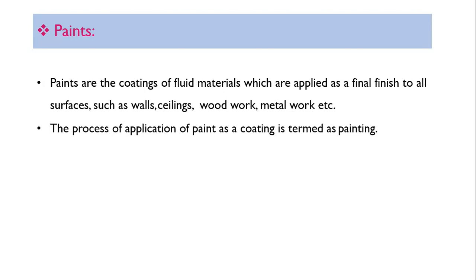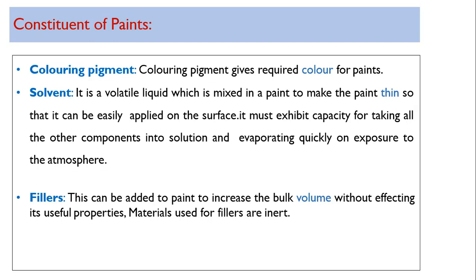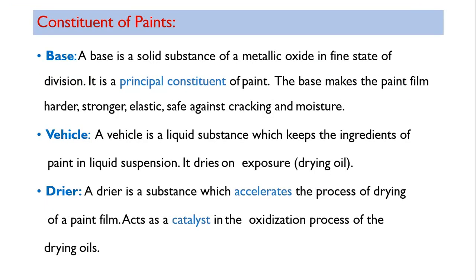Due to paint, everything gets concealed — the quality of the material and the workmanship — and it attracts people. So selection of paint is very important. The process of application of paint as a coating is called painting. Now, constituents of paints — the materials by which paint is prepared — are: base, vehicle, dryer, coloring pigment, solvent, and fillers.